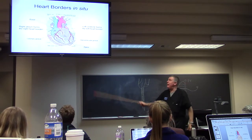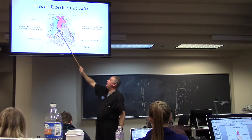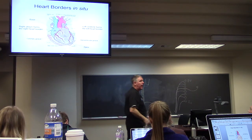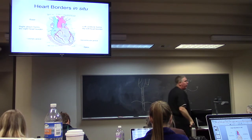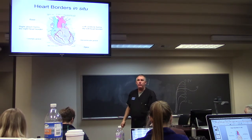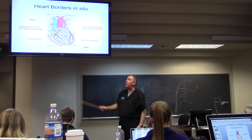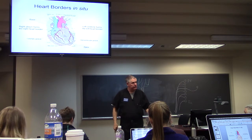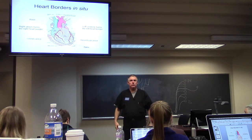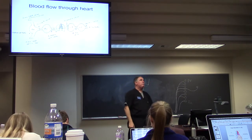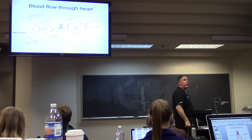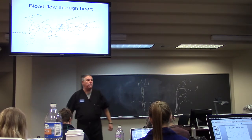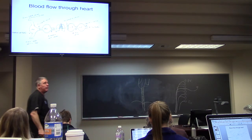This is the apex of the heart. This is the base up here where the great vessels are. So if I say you're having an apical myocardial infarction, that means you have a blocked artery affecting the tip of the heart, which is the left ventricle. This Frank Netter illustration shows the circulation through the heart.